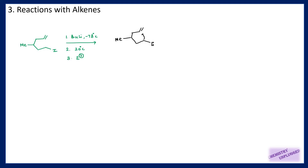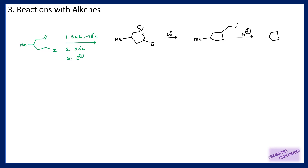So it will attack on this carbon and this bond will shift, forming a five-membered cyclic ring. When this bond shifts, there is a negative charge here on which Li will attach. Next we are using an electrophile, so this electrophile will replace this lithium and we have the electrophile attached here.